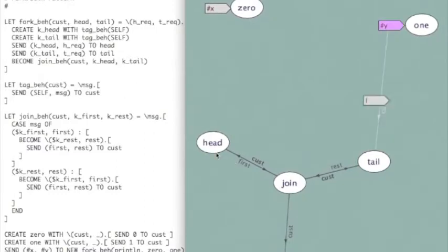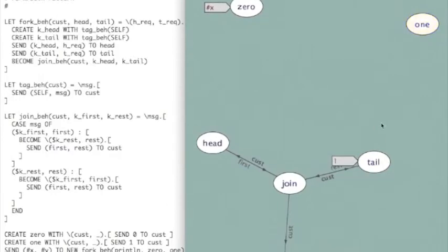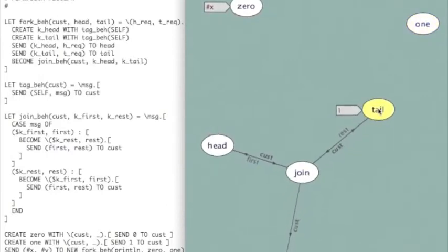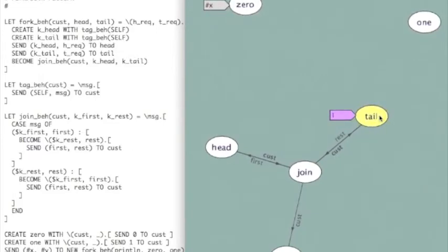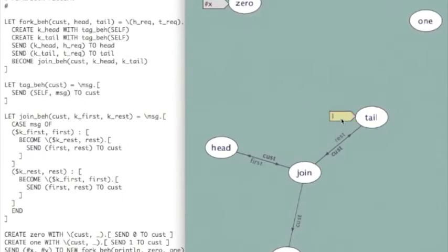So what ends up happening now is each of these services received a message. The one service responds back to its customer, which is the tail. And the tail receives that message. And of course, it's going to be this tag behavior. So it's going to tag that message with its own identity and send it on.